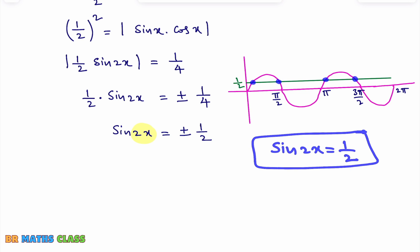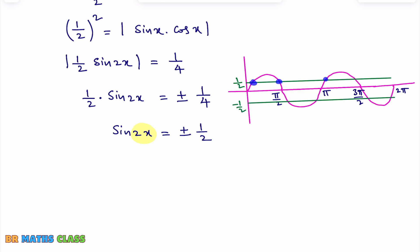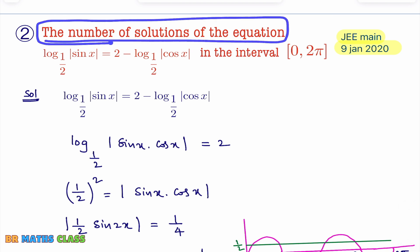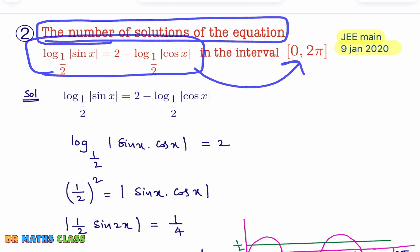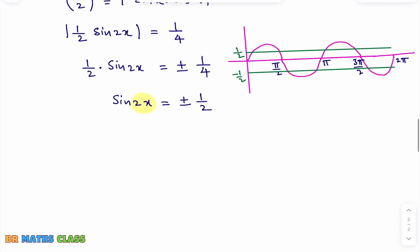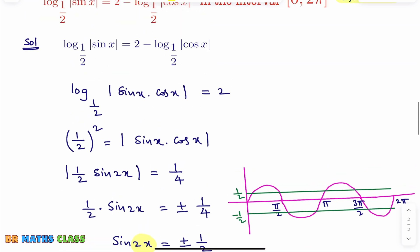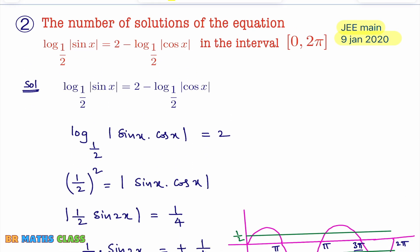For sin 2x = -1/2, draw a line at y = -1/2. From 0 to 2π, you again get 1, 2, 3, 4 solutions. The important thing is they are asking the number of solutions, not the exact x values. So combining both cases: 4 + 4 = 8 total solutions. Therefore, the total number of solutions is 8.